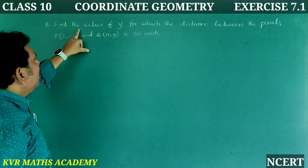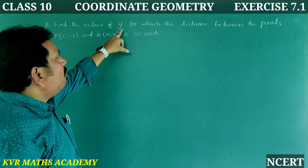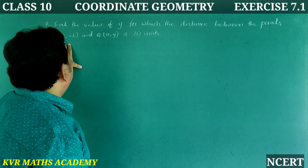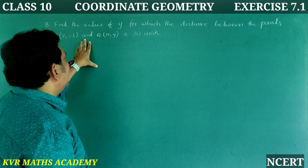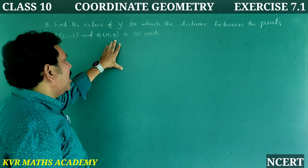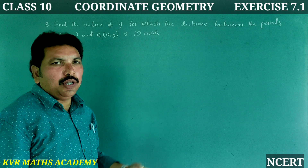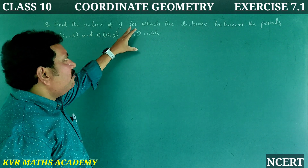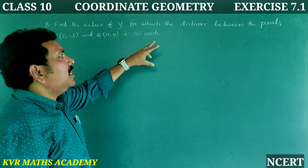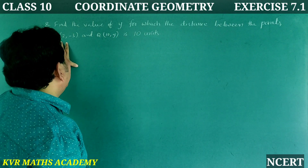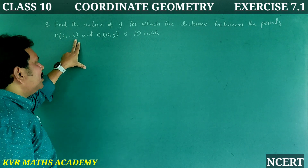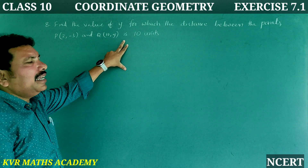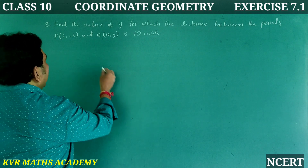Next, the 8th question: Find the value of y for which the distance between the points P(2, −3) and Q(10, y) is 10 units.